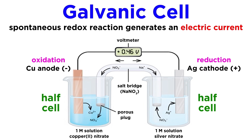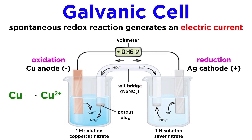The electrode that contains the metal to be reduced — in this case silver — is called the cathode. The half-cells are connected by a salt bridge that maintains charge balance.